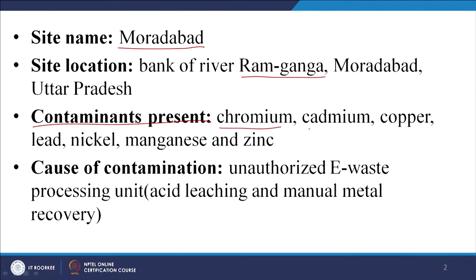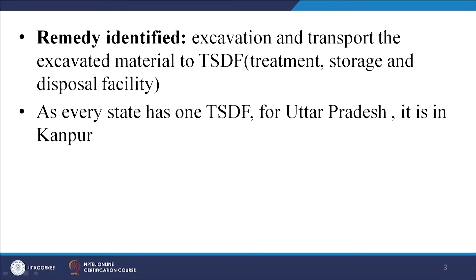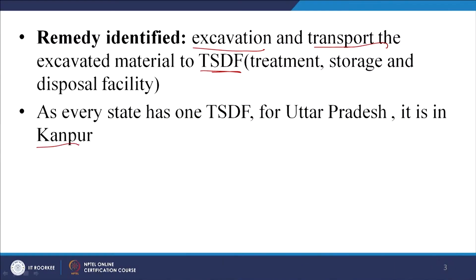From what we analyzed, we looked at chromium, cadmium, copper, lead, nickel, manganese, and zinc - typically what you would expect in e-waste. There were some other rare earth metals at relatively lower concentrations, but these were at relatively higher concentrations. One aspect proposed was excavation and transport to the TSDF - treatment, storage, and disposal facility. In India we typically have at least one TSDF per state, and the one relevant here is located at Kanpur.